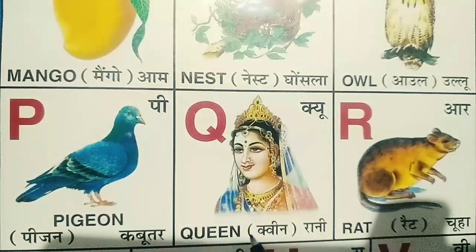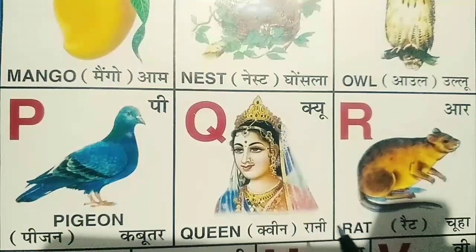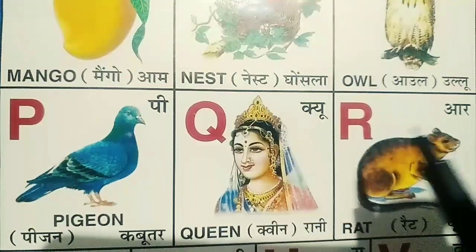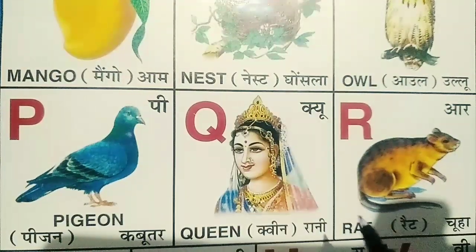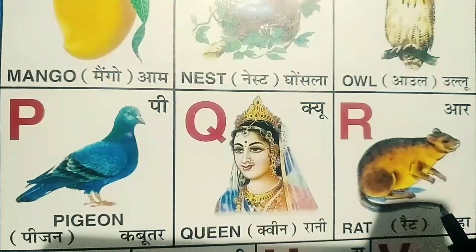Q for queen. Queen means rani. R for rat. Rat means chuha.